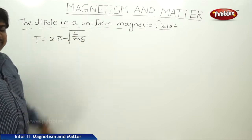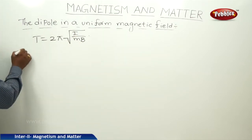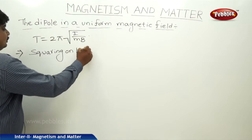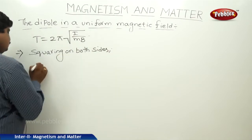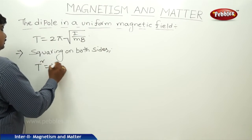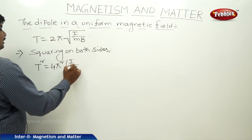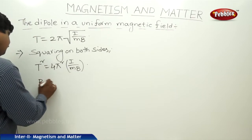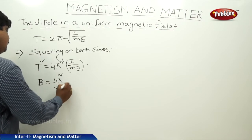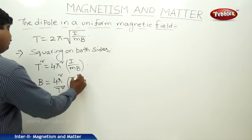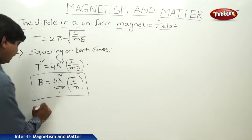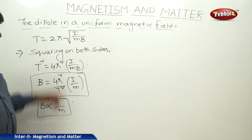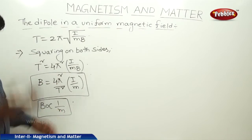Now I want to find out the magnetic field due to this dipole placed in the uniform magnetic field. Squaring both sides, T squared is equal to 4 pi squared into I by MB. Therefore B is equal to 4 pi squared I by M T squared. The magnetic field is inversely proportional to the magnetic moment — that is why we write the minus symbol, because they are inversely proportional.